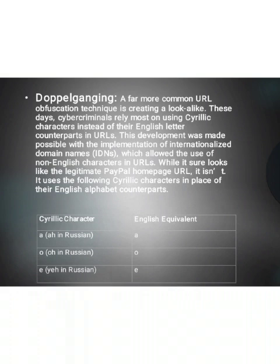The second one is Doppelganging. A far more common URL obfuscation technique is creating a look-alike. These days, cybercriminals rely most on using Cyrillic characters instead of their English letter counterparts in URLs. This development was made possible with the implementation of internationalized domain names, i.e. IDNs, which allow the use of non-English characters in URLs.